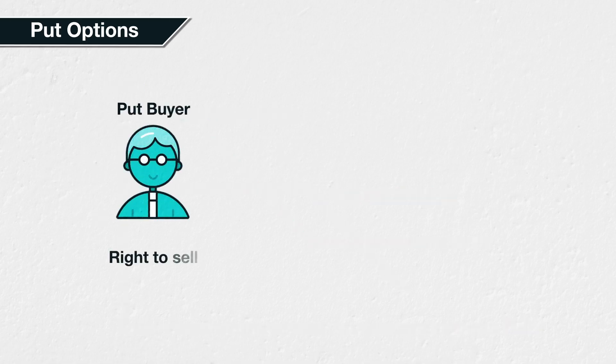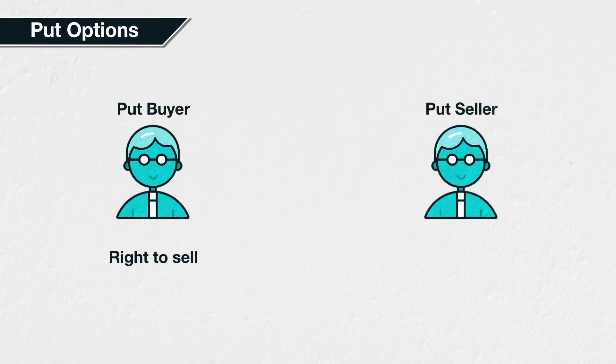The buyer of a put option is purchasing the right to sell the underlying asset at the strike price on the expiry date. On the other side of the trade, the seller of the put option has an obligation to buy the underlying asset from the buyer, should the put option buyer choose to exercise their right.